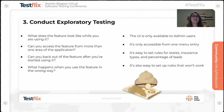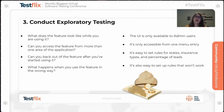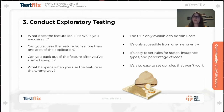Step three is to conduct exploratory testing. What does the feature look like while you are using it? Can you access the feature from more than one area of the application? Can you back out of the feature after you've started using it? What happens if you use the feature in the wrong way? For this Lead Assignment Engine, I discovered that the UI was only available to admin users — they were the only ones who could set up the engine, and it was only accessible from one menu entry. It was easy to set rules for states, insurance types, and percentage of leads. But it was also easy to set up rules that didn't work.